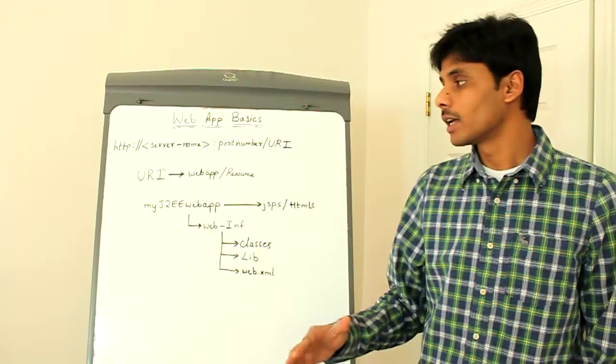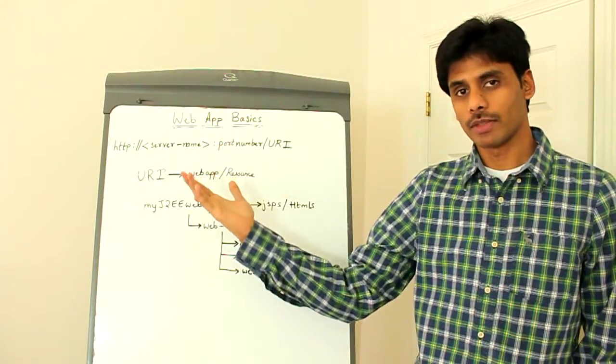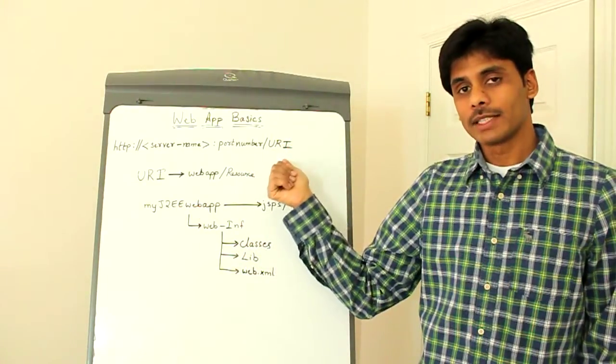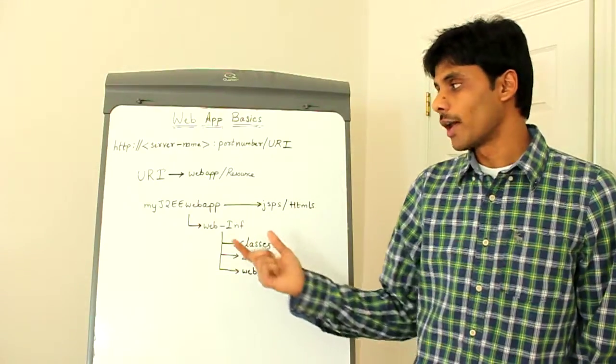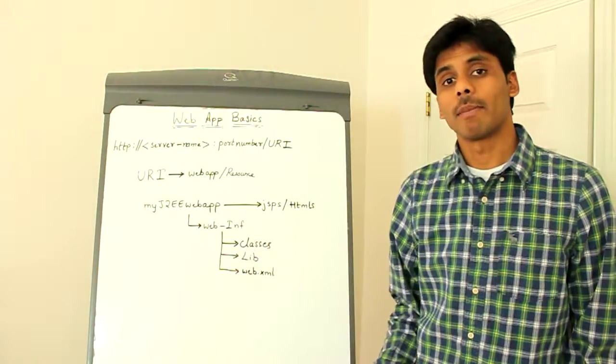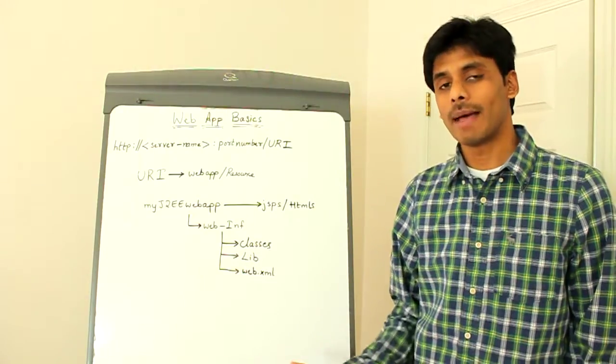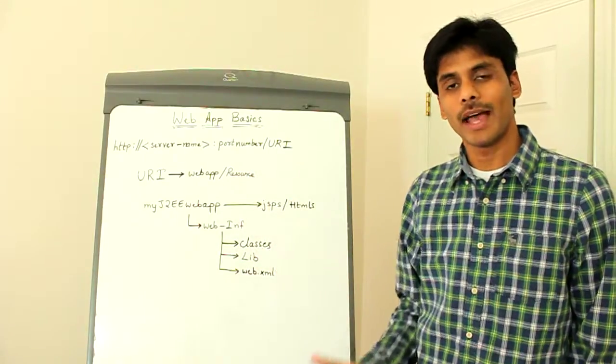Behind the scenes, your browser connects to the server on port 80 or any other port if the server is using a different port. And it provides the server with a URI. The server then looks at the URI and figures out which particular web application should service this request. And it calls into the web app and it provides the web app with the resource which you are trying to access.